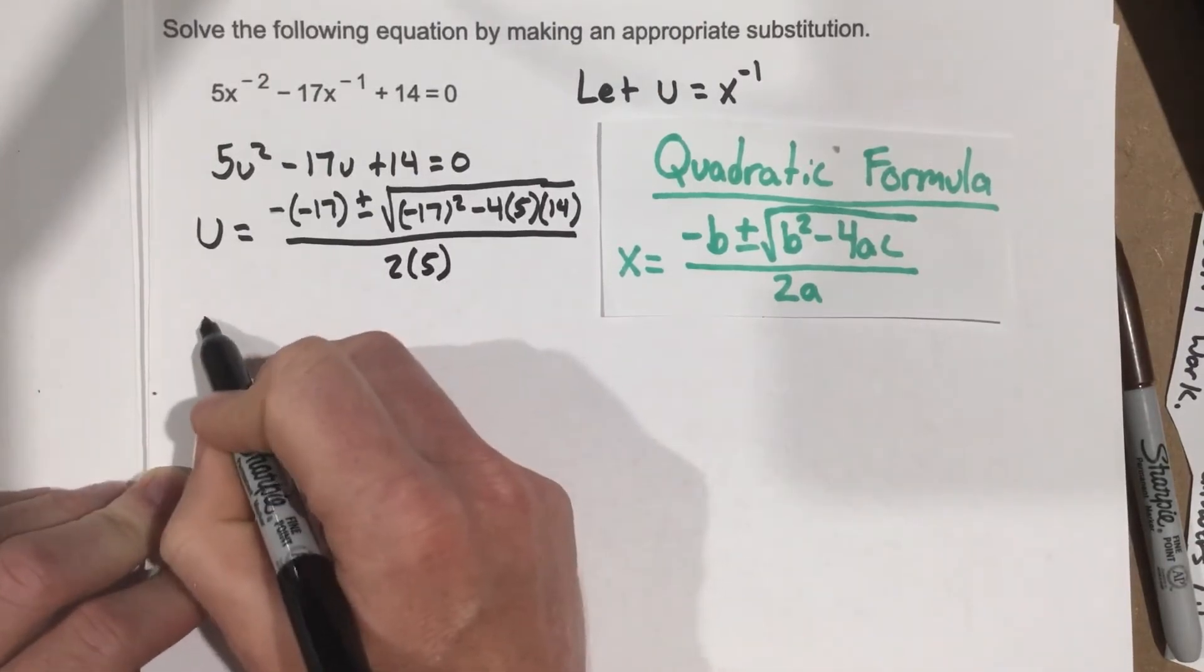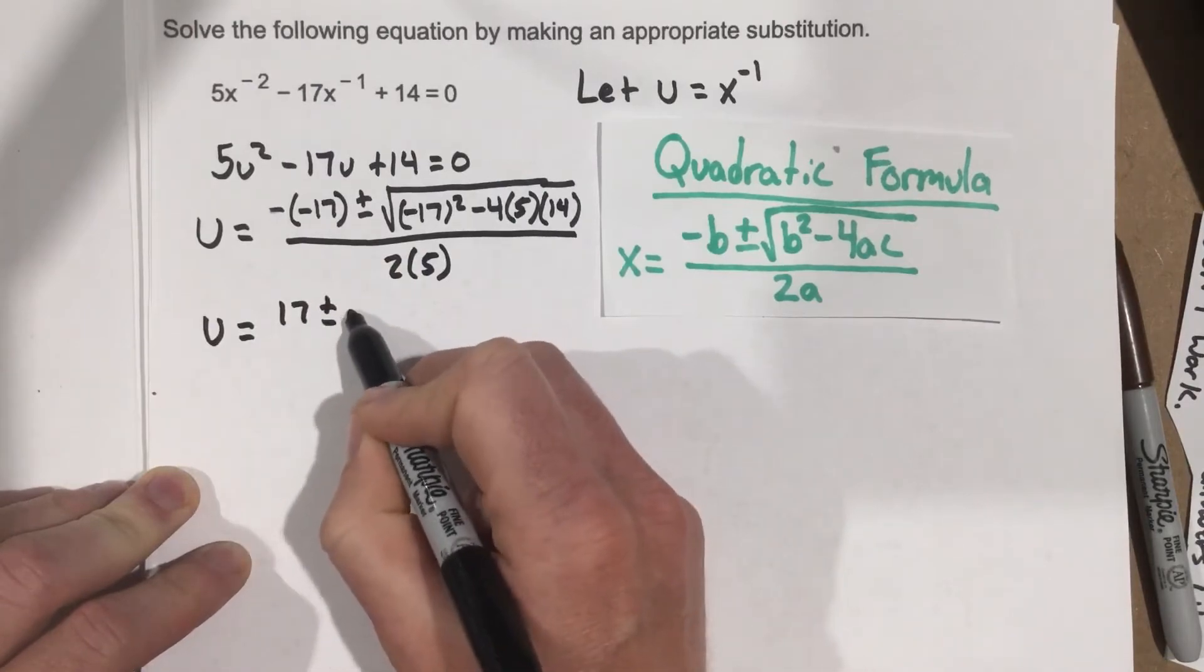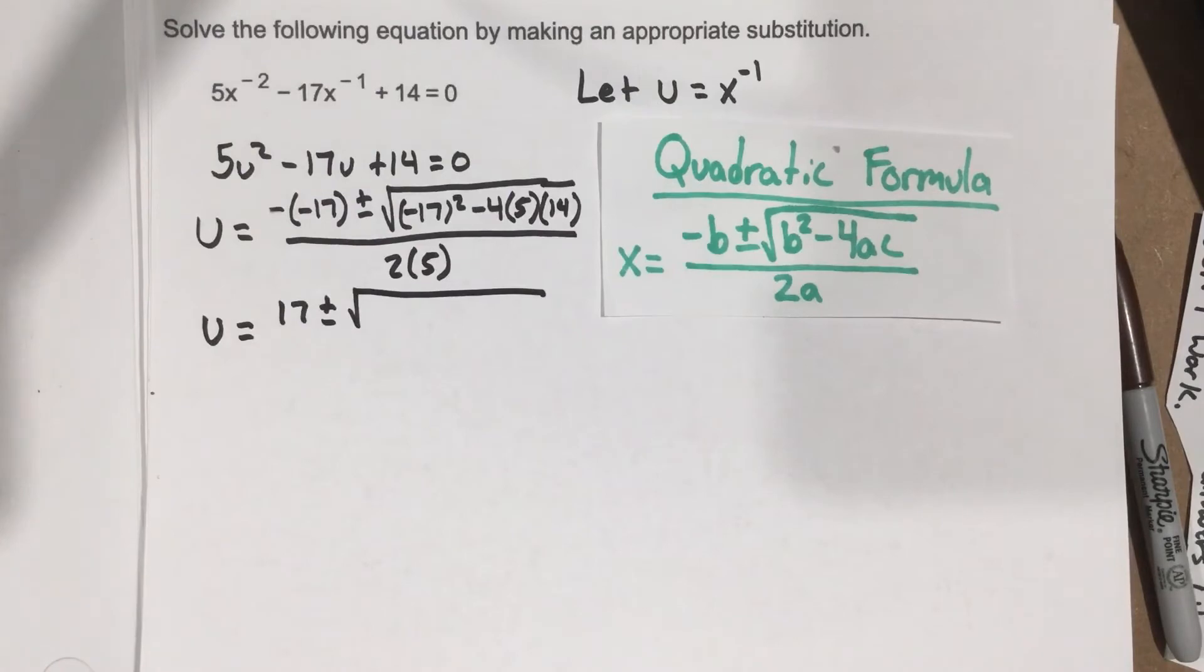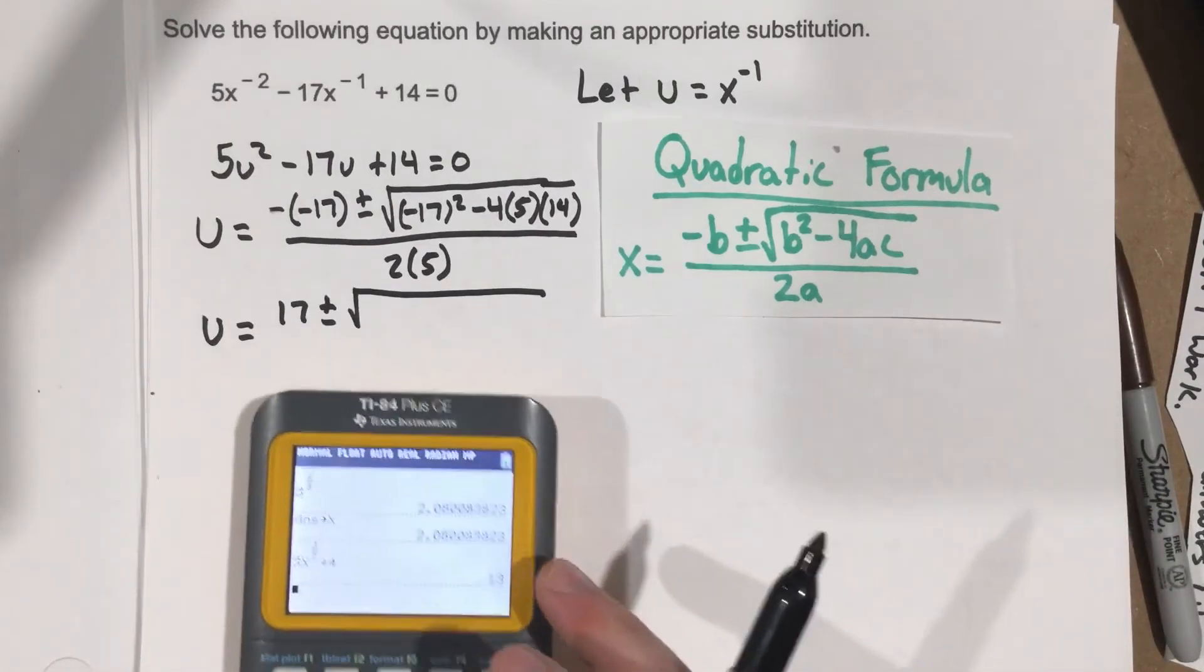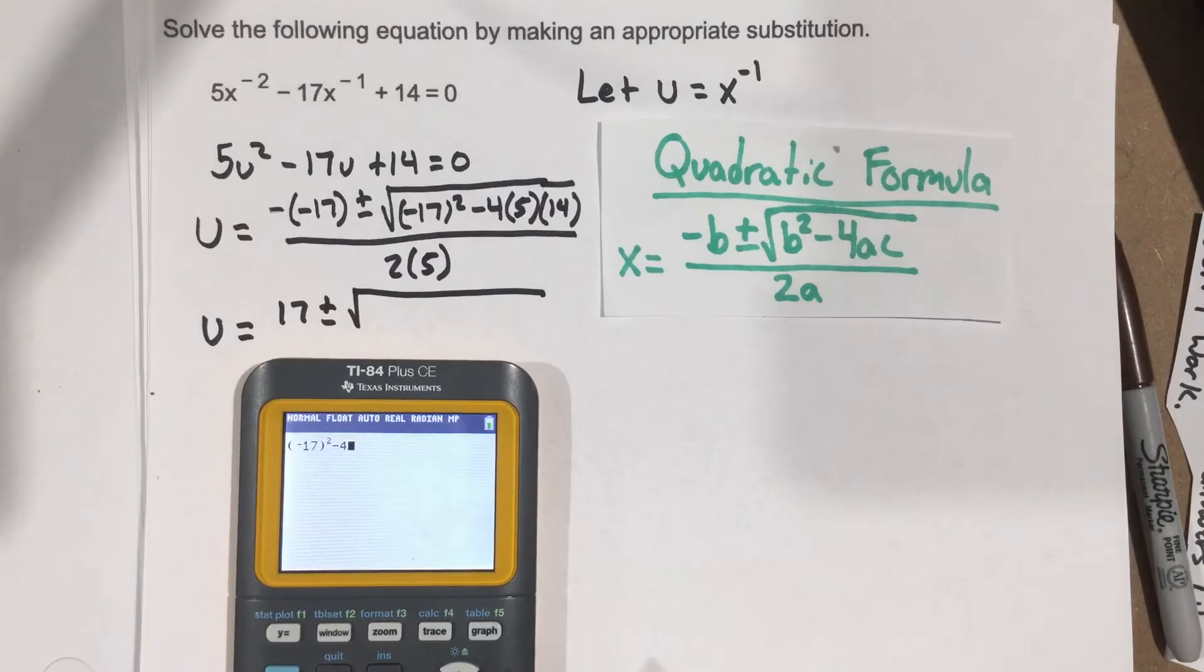So that's u equals 17 plus and minus root. I'm going to plug all that in the calculator. So we end up with negative 17 squared, minus 4,